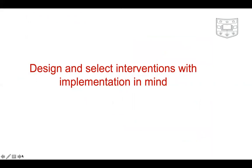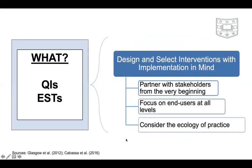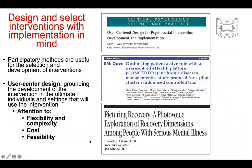It's not just about reach. Many interventions proven to be efficacious are very costly and not necessarily adaptable to context. The idea is to design and select interventions with implementation in mind: partner with stakeholders, focus on end users, and consider the ecology of practice. Using participatory methods and user-centered design to develop more flexible interventions means cost, flexibility, and feasibility are taken into account at the moment of designing the intervention.